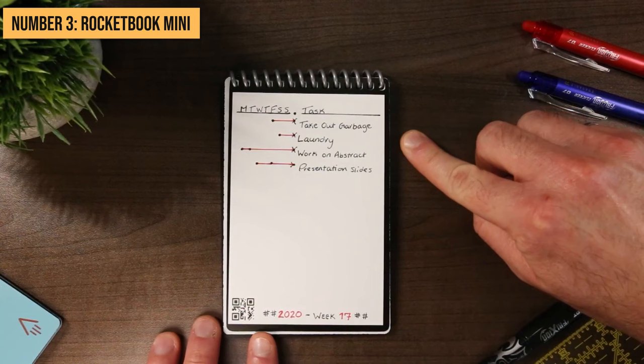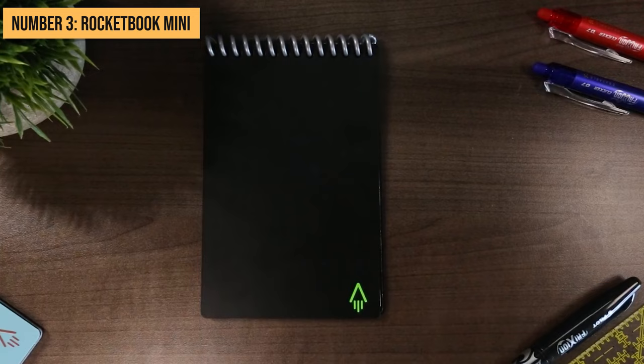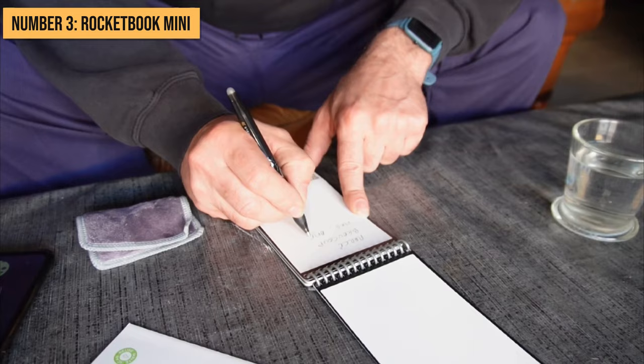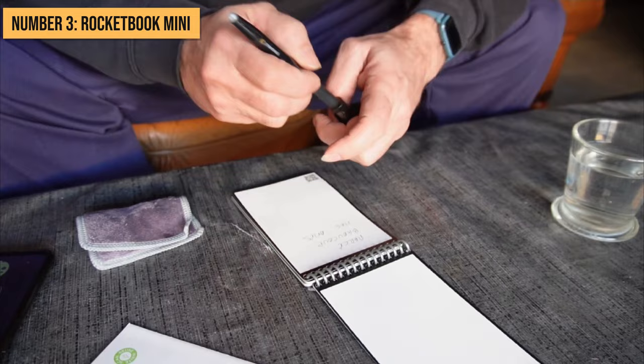Simply write out notes, highlights from reading, or brainstorm ideas. Then open the Rocketbook app and scan the page to blast your handwriting to the cloud service of choice like Google Drive, Dropbox, Slack, email, and more for easy access across devices.